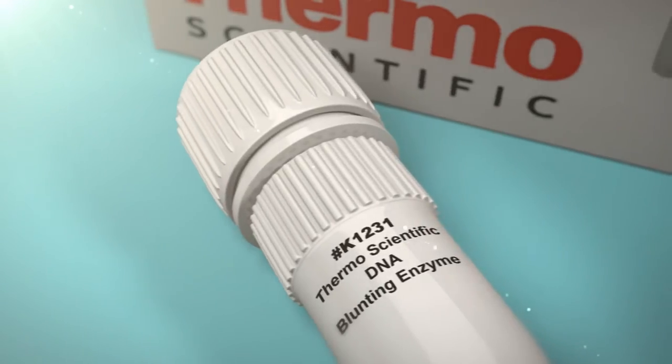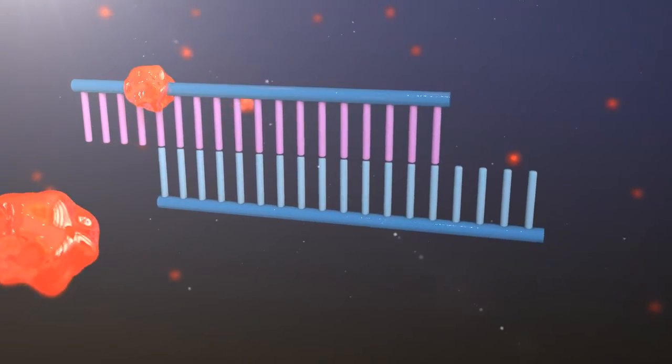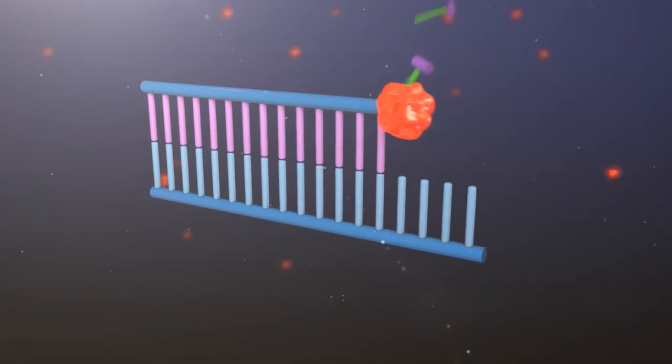For this purpose, the kit includes a proprietary DNA blunting enzyme that removes three prime overhangs and fills in five prime overhangs using the nucleotides included in the reaction buffer.